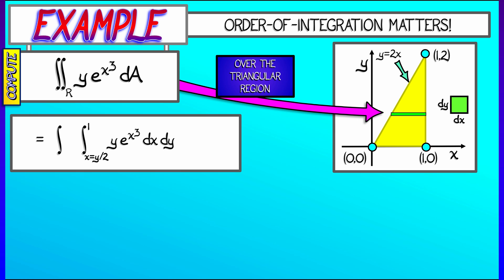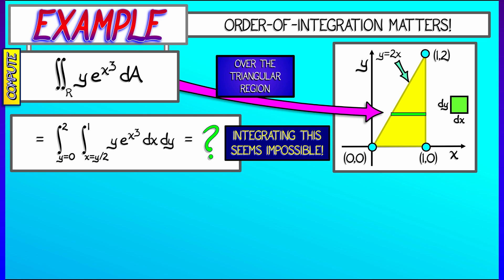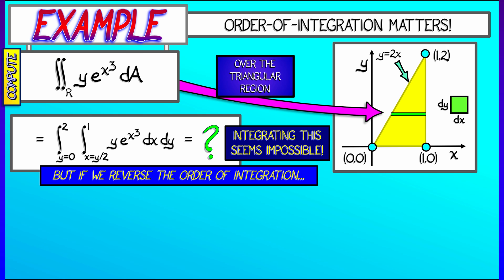Then once we've done that, we sweep in the y direction from y equals 0 to y equals 2, going from lower to higher. Now, wait a minute. How do I integrate e to the x cubed? I don't know how to anti-differentiate that. That seems impossible to get that closed form expression. So what do we do? Do we give up? No. Don't give up. Reverse the order of integration and keep your fingers crossed. See what happens.